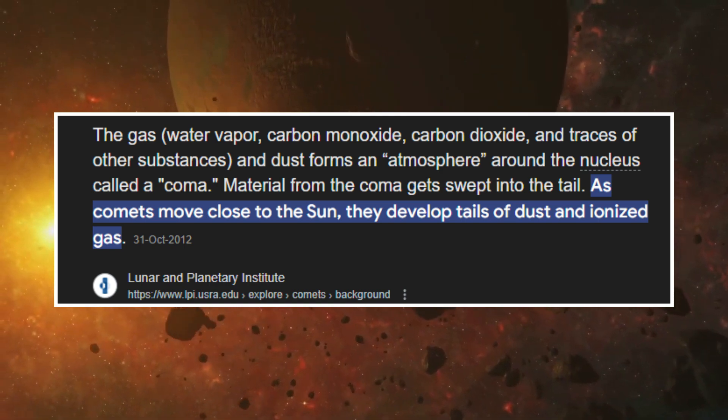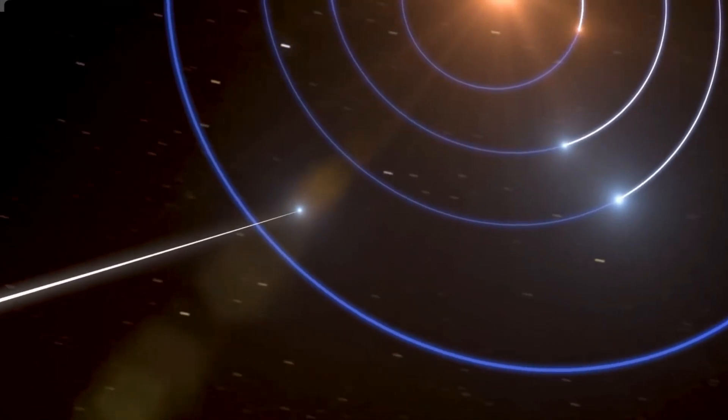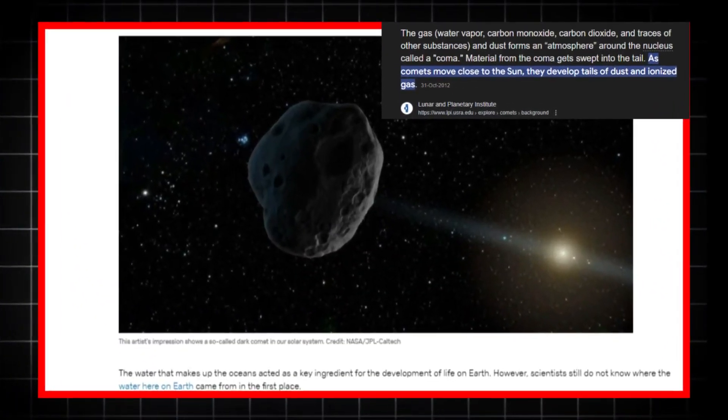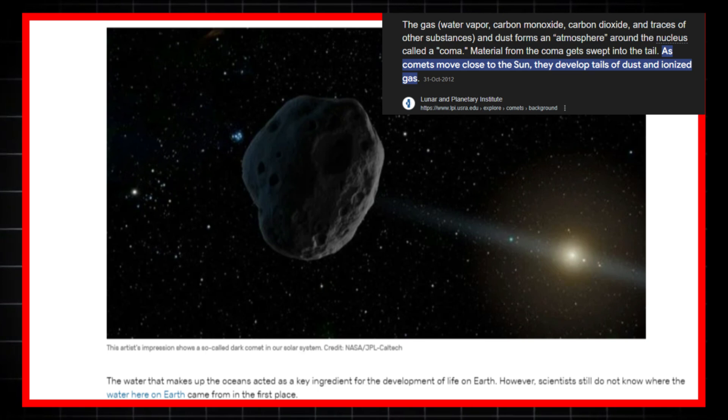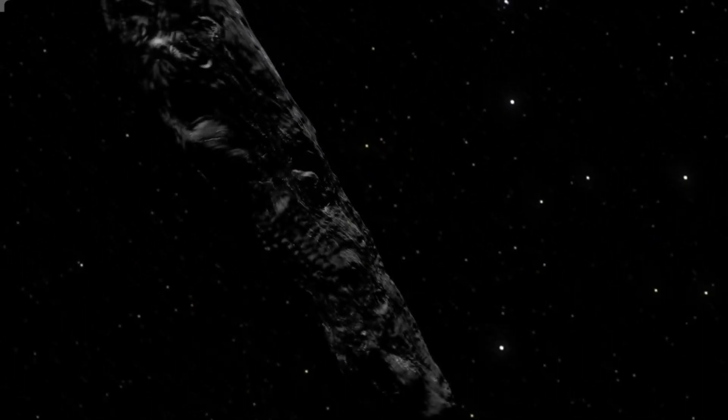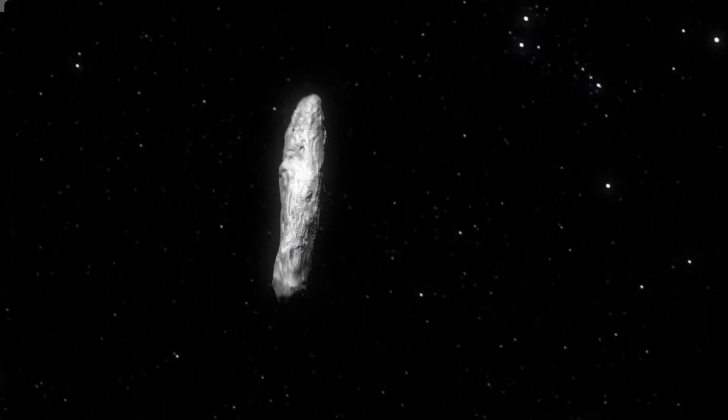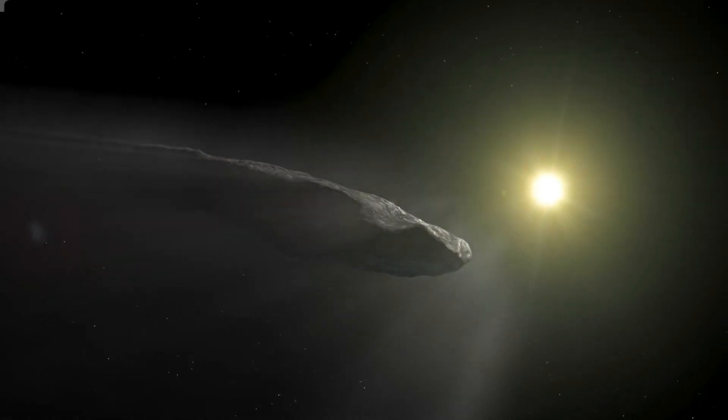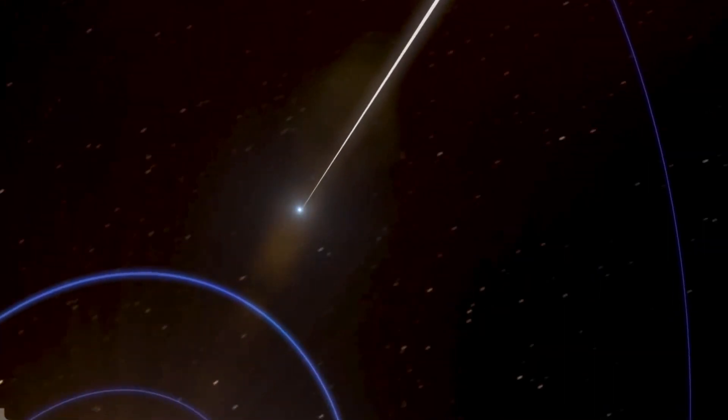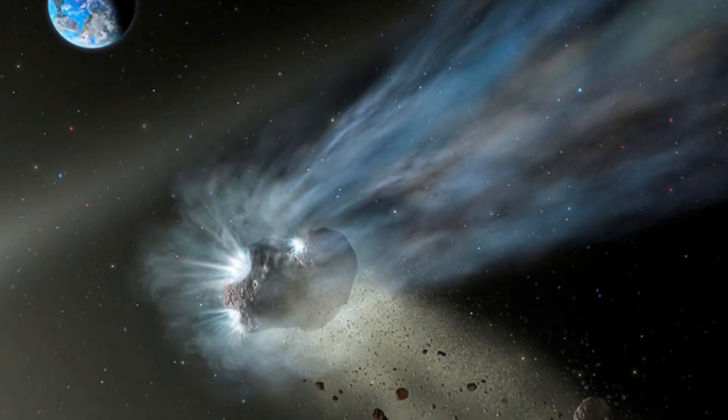Dark comets, with their potentially more subtle outgassing mechanisms, might have contributed to this process in ways we haven't fully understood yet. For instance, studies of Mars and Titan, one of Saturn's moons, have shown that these planets may have also received vital ingredients for life from comets. By comparing the chemical compositions of materials on these planets with those found in comets, scientists have suggested that comets may have delivered water and organic compounds to these bodies as well.